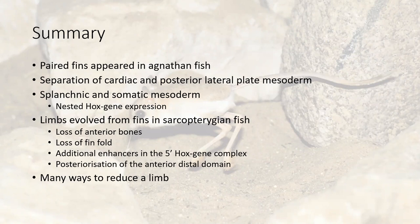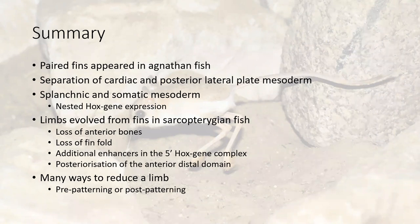There are many ways to reduce a limb: either pre-patterning where the digits are just never patterned, or post-patterning, where the digits are patterned but then die from apoptosis before they are properly formed.